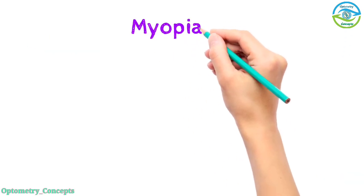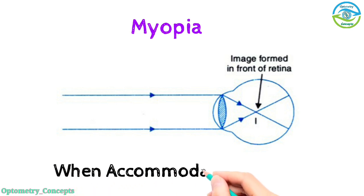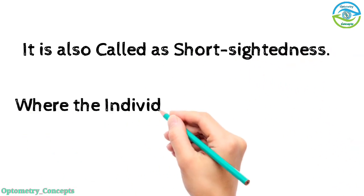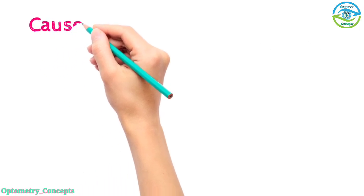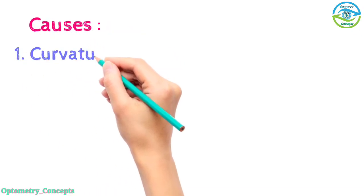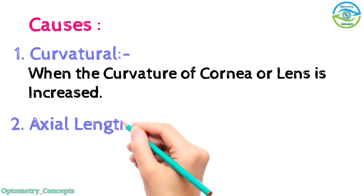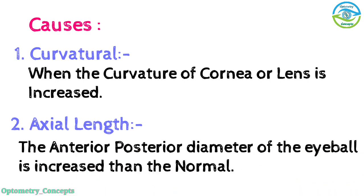Myopia is when the rays of light coming from infinity are focused in front of the retina when accommodation is at rest. It is also called short-sightedness where the individual is only able to see at near. Causes: curvature - when the curvature of cornea or lens is increased; axial length - the anterior posterior diameter of the eyeball is increased than normal.